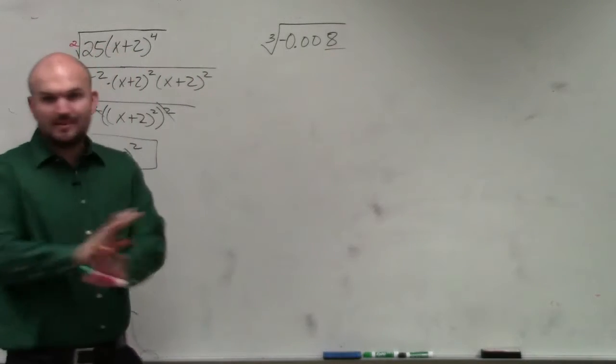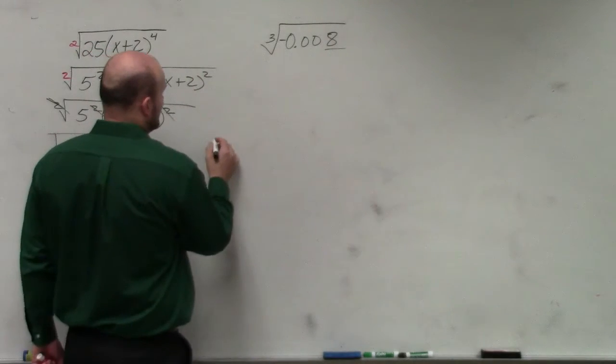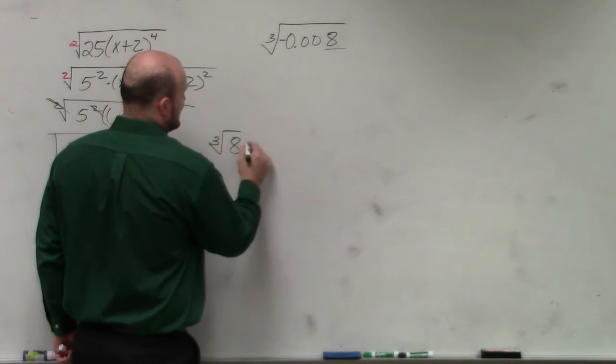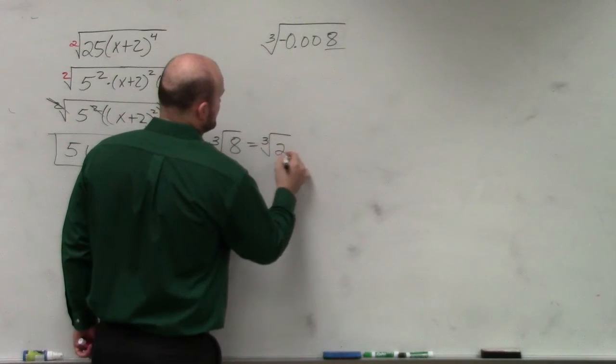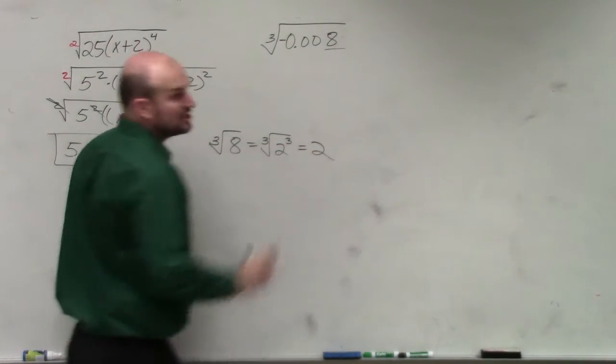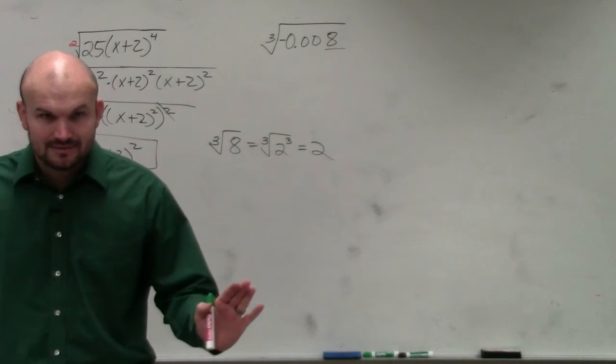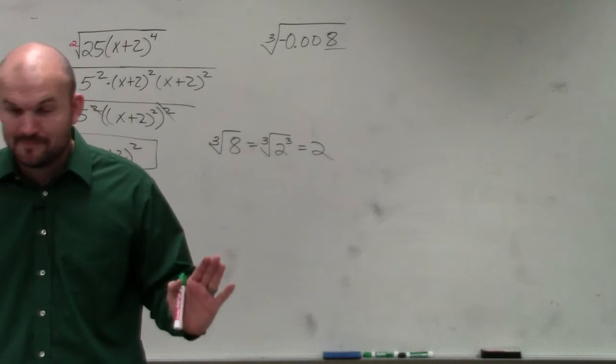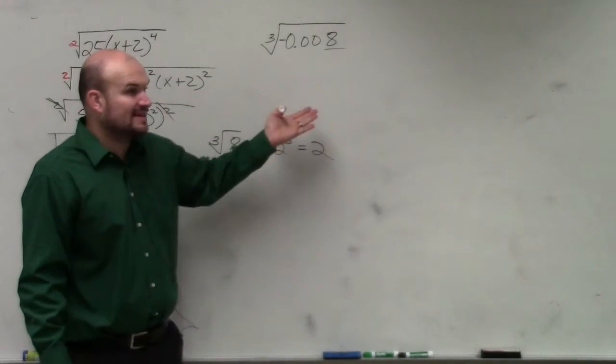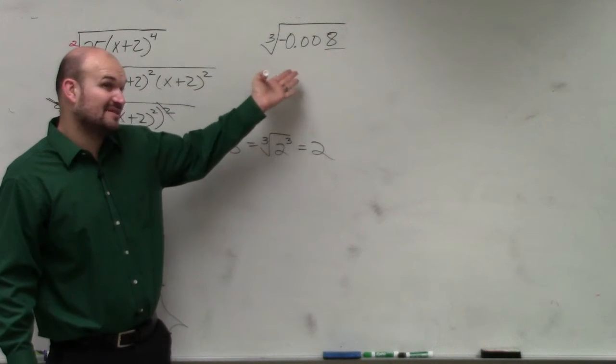8 is a cube number. Forget about the decimals for a second. We know that the cube root of 8 is equivalent to the cube root of 2 to the third power, which is just 2. Does everybody follow me? But we need to write this as something where it's going to give us this decimal.